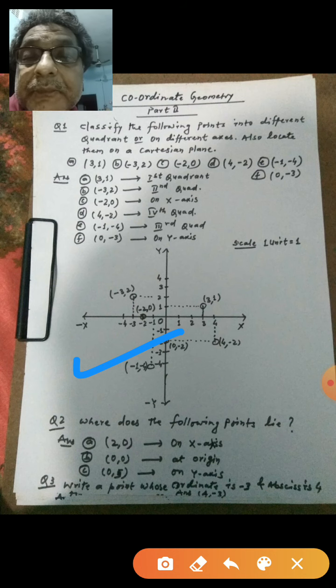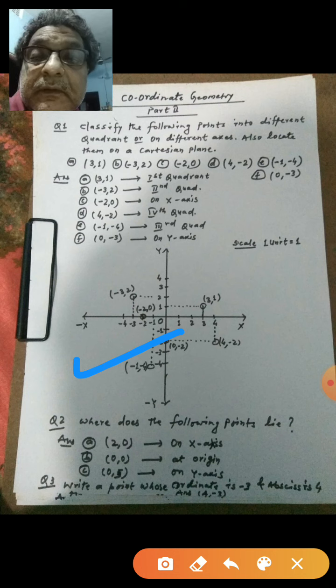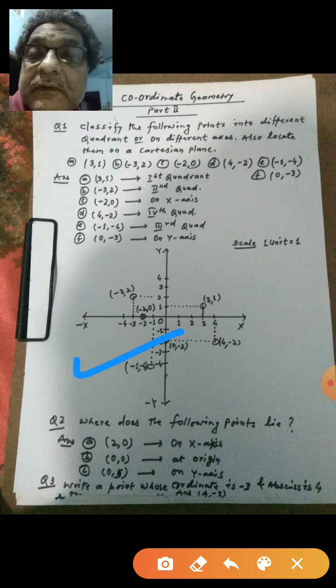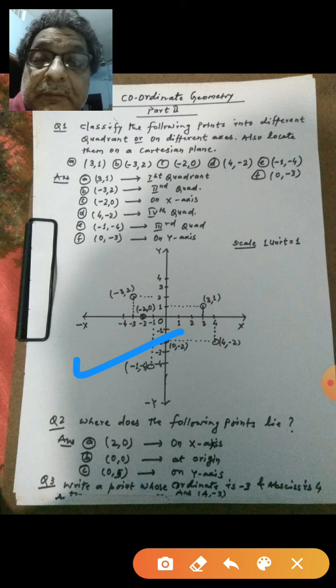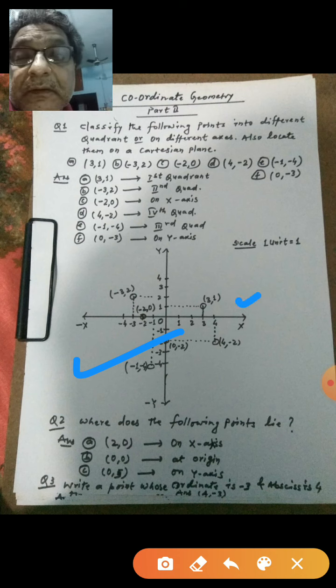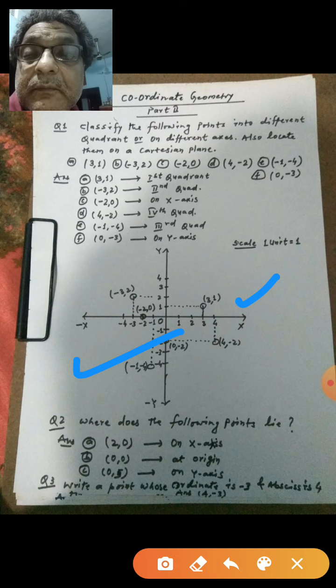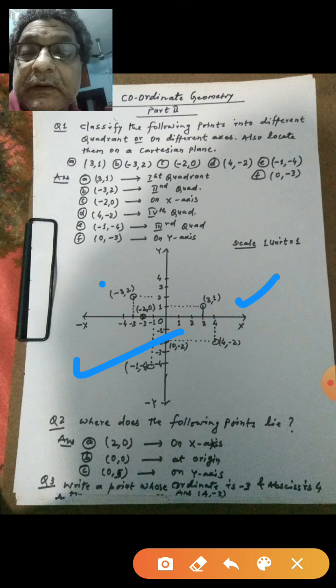You know first point, both values are positive, 3 comma 1, so it belongs to first quadrant. X value is 3, y value is 1. So take x equal to 3 and goes above, and from y-axis we have to take 1. So both these two meet at point, that is the required point 3 comma 1, which is located here. Next is minus 3 comma 2.